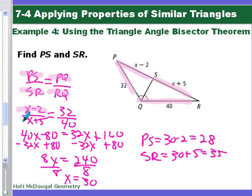Fill in all the values and expressions we have. Cross-multiply. That will get us to 40X minus 80 is equal to 32X plus 160. Move our like terms to one side, and we end up with 8X is 240 or X is 30. So they ask us to find PS and SR. So PS is going to be X minus 2, which is going to be 28. SR is X plus 2, which is 35. And look, it's your turn now.